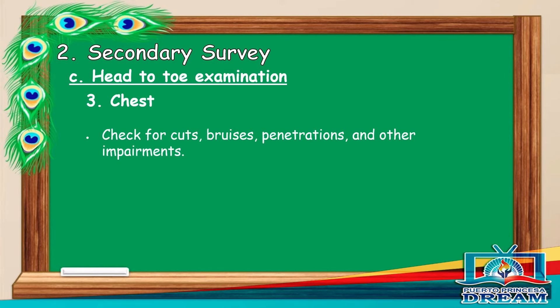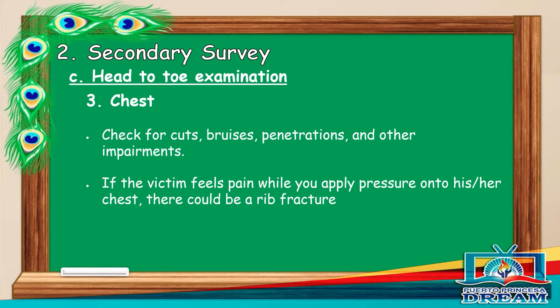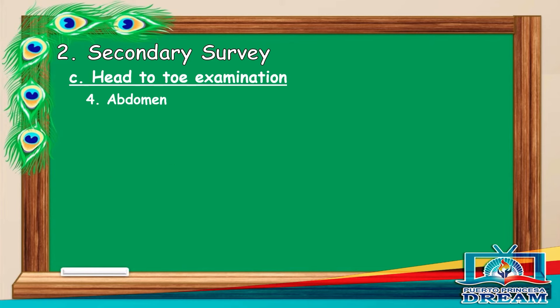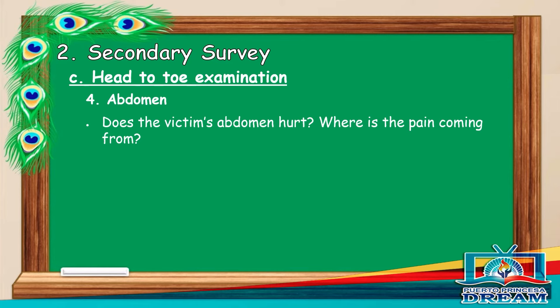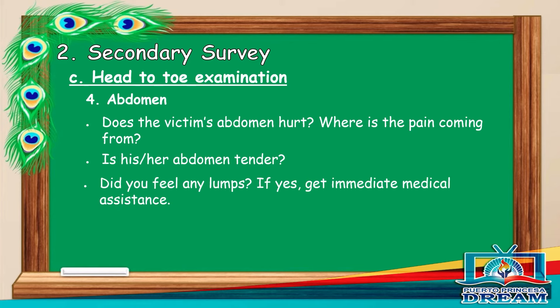Chest. Check for cuts, bruises, penetrations, and other impairments. If the victim feels pain while you apply pressure onto his or her chest, there could be a rib fracture. Abdomen. Does the victim's abdomen hurt? Where is the pain coming from? Is his or her abdomen tender? Did you feel any lumps? If yes, get immediate medical assistance.